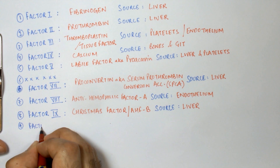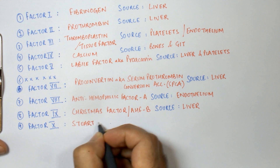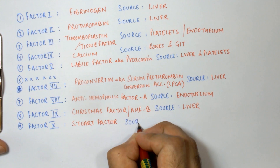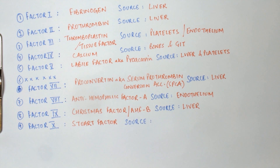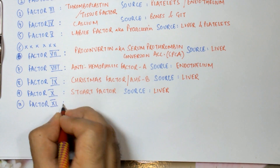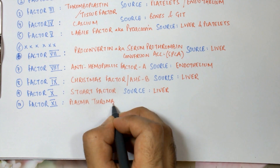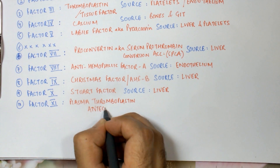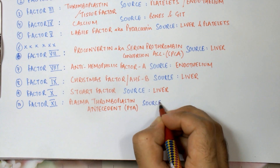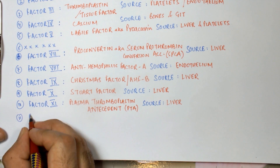Factor number ten is one of the most important factors in coagulation, also known as the Stuart factor or the Stuart-Power factor. Its source is the liver. Factor number eleven is the plasma thromboplastin antecedent, and its source is also the liver.